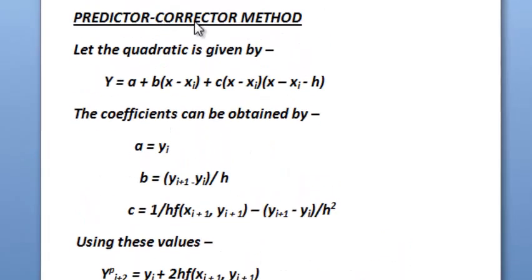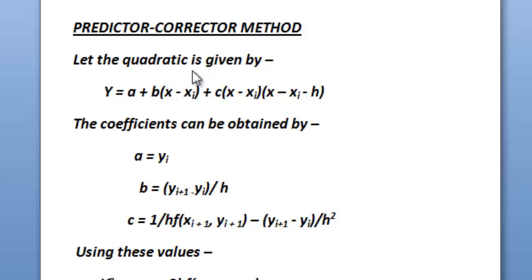The special feature of the predictor-corrector method is that here the solution is evaluated using the previous points like yi minus 1, yi minus 2 etc. on the solution curve. Thus, all past information regarding the behavior of the solution is not ignored. This is efficient and it would be desirable to use previous points in evolving a solution.